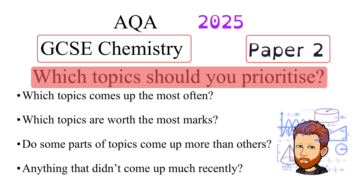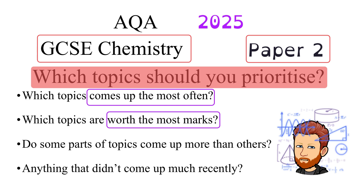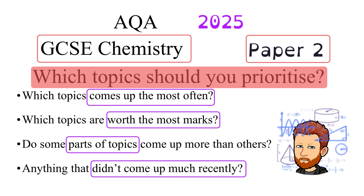The questions I'll be looking to answer are: which topics come up the most often? Which topics are worth the most marks? Are some parts of topics more important to revise than others? And are there some things that haven't come up much recently which could therefore be slightly more likely to come up in the future?